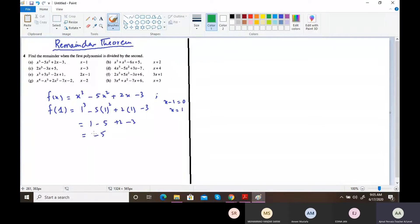This is going to be your remainder. This theorem is considered as remainder theorem. I repeat the process: the first polynomial will put it at equals to f(x) or p(x), and the second one will be put it equals to 0 to get the value of x.